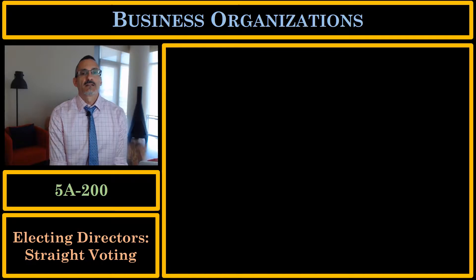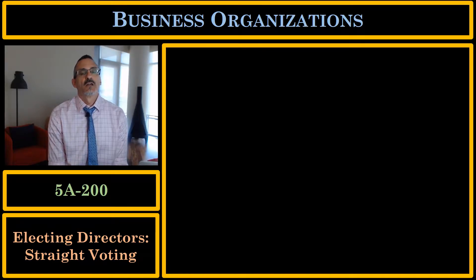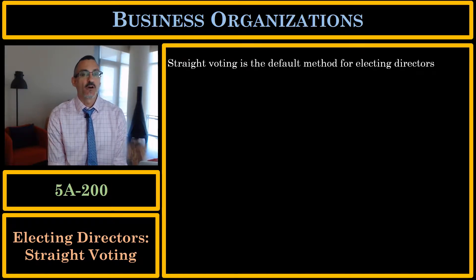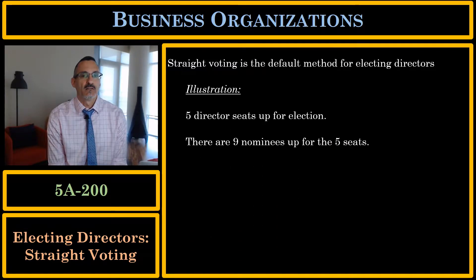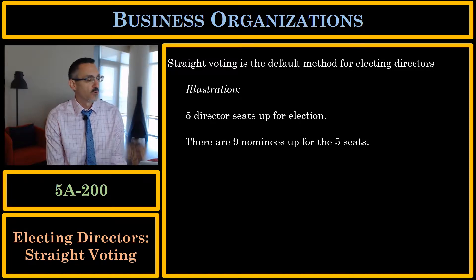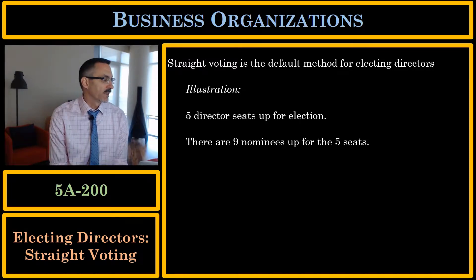Let's talk about electing directors. Shareholders elect directors through a process called straight voting. Straight voting is the default method of electing directors. The corporation can change it if they want, but let's discuss exactly how straight voting works — it's fairly important, and we'll discuss why.